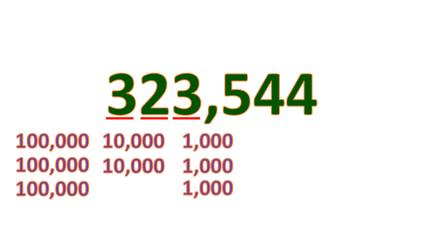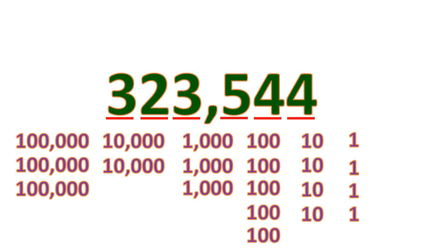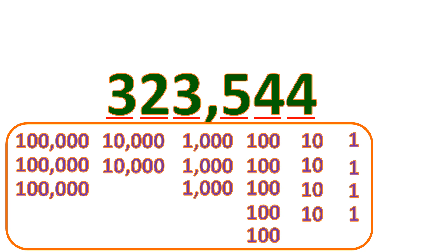This three means there are three one hundred thousands. This two means there are two ten thousands. This three means there are three one thousands. This five means there are five one hundreds. This four means there are four tens. And this other four means there are four ones. All of these are actually taking a position that determines the value of each digit.